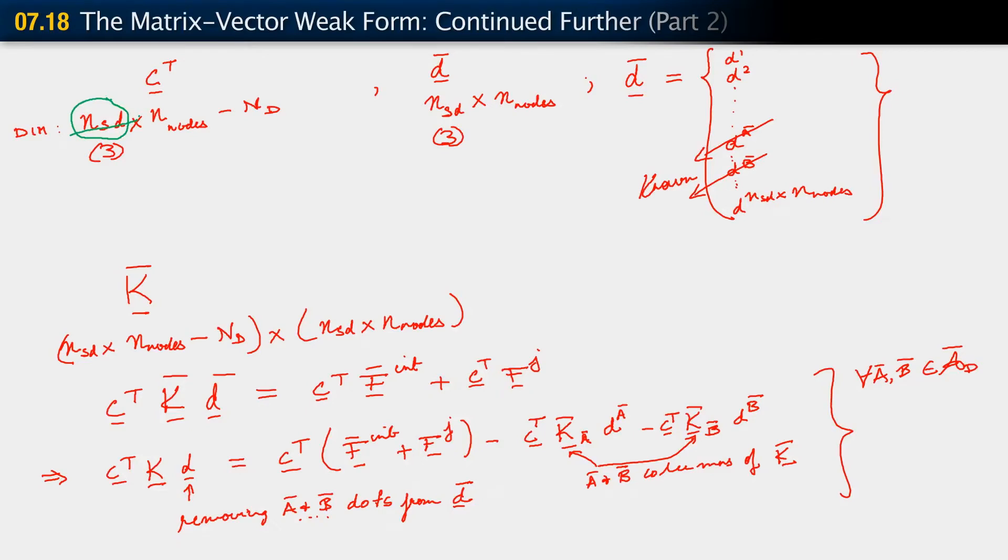Thereby, the dimension of C transpose is number of nodes minus N sub D, where N sub D is the number of Dirichlet conditions, number of nodes with Dirichlet conditions. That, however, propagates all the way through the rest of the segment. So I'm going to systematically identify all those NSDs and just put lines through them, just cancel them out.